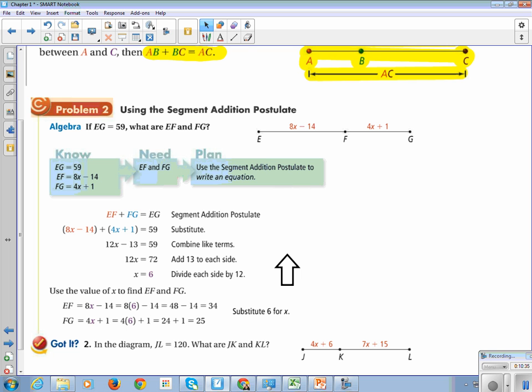This is not the answer to the question. Just because we got x equals 6, we have to always go back and read what they're looking for. We're looking for EF and FG. So we have to take that 6 and put it back in for x to give us 8 times 6, which is 48 minus 14, which is 34. And then we're going to take that x and put 6 in. 4 times 6 is 24, plus 1 is 25. So the answer to this problem is 34 and 25.